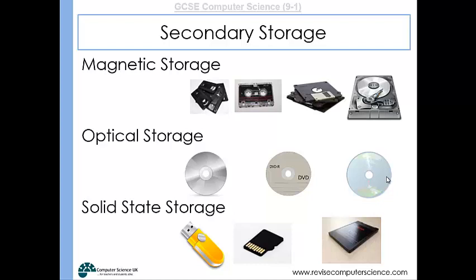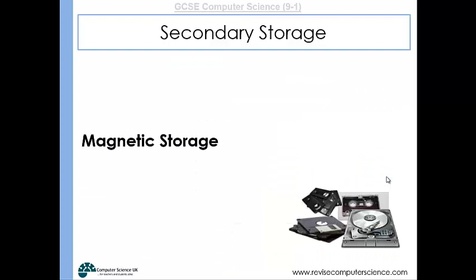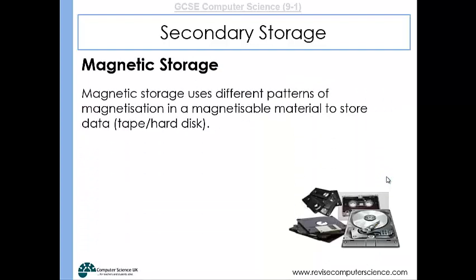Magnetic storage devices are made up of magnetised or magnetisable material. This material can have elements that are magnetised, therefore representing a 1, or be demagnetised and represent a 0.